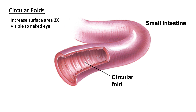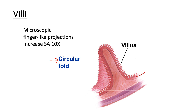The first and largest of these three structures are the circular folds. These are easily visible by the naked eye — ridges that line the inside of the small intestine. While they increase the surface area by about threefold, they also act as speed bumps to slow the ingested contents as they move through. These circular folds are made up of the mucosal and submucosal tunics of the GI tract. Atop these circular folds, we have structures called villi — little finger-like projections — and they increase the surface area further tenfold.